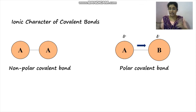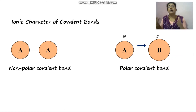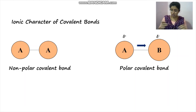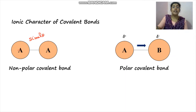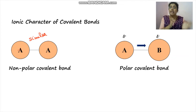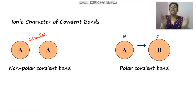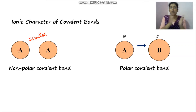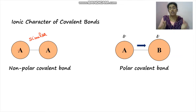Covalent bonds can form in two cases: between two similar atoms or between two dissimilar atoms. In the first case, formed between similar atoms, the shared electrons are equally available for both atoms — like H₂, where we have two similar hydrogen atoms and the shared electrons lie midway between them. Such bonds are non-polar covalent bonds.